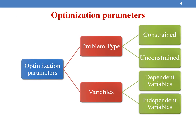Coming to the optimization parameters. Optimization parameters are of two types: problem type and variables. Problem type is categorized into constrained and unconstrained, and variables are divided into dependent variables and independent variables.